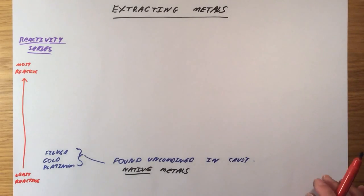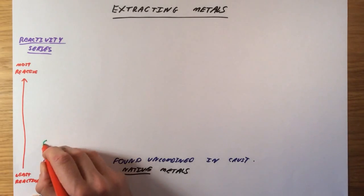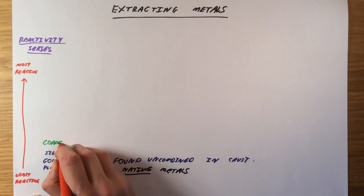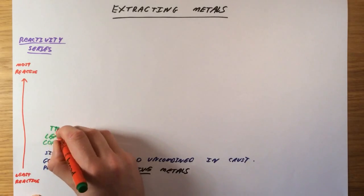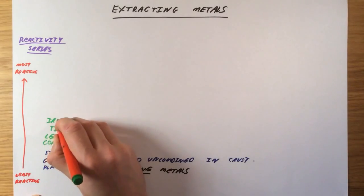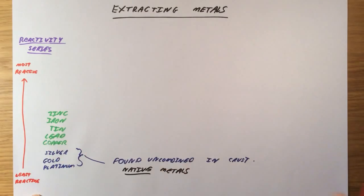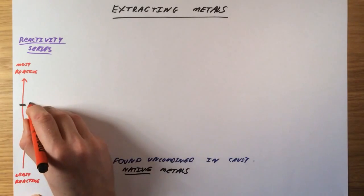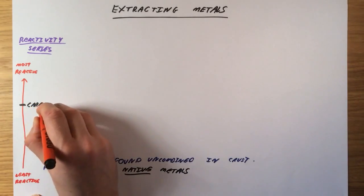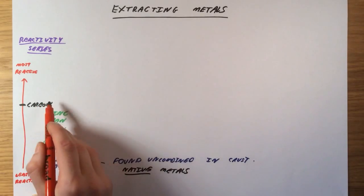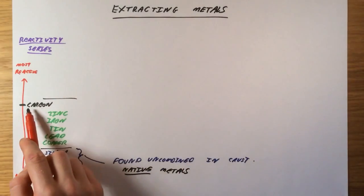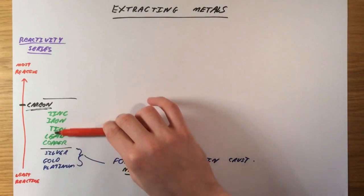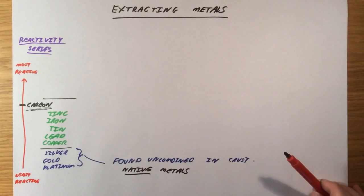Because they are found kind of on their own natively on the Earth's surface or in the Earth's crust. The second group we're going to talk about are slightly more reactive. I'm going to do these in green. These are things like copper, lead, tin, iron, zinc. What I'm going to do also is put a little bar here and put carbon. So this is our second category. The reason why it's important that we know that carbon is up here is because we actually have to extract these from what we call ores.